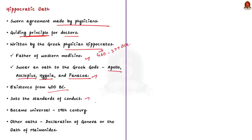This oath became universal towards the early 19th century. It has been rewritten multiple times and medical schools use different versions — some use the original Greek oath, while others use the Declaration of Geneva or the Oath of Maimonides. Whichever version is used, virtually all medical schools use an oath of some kind.